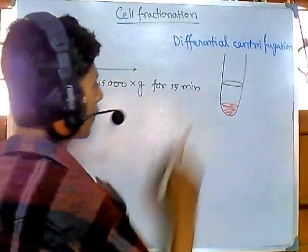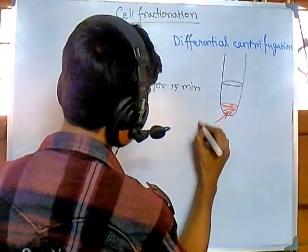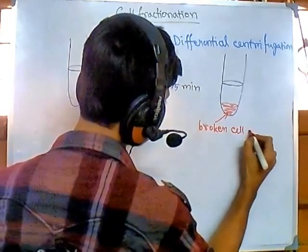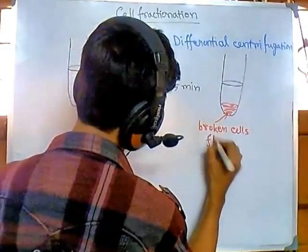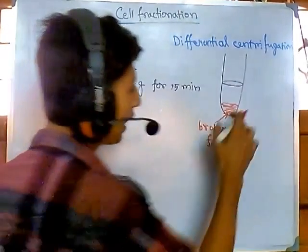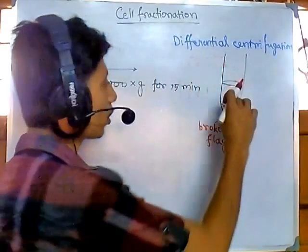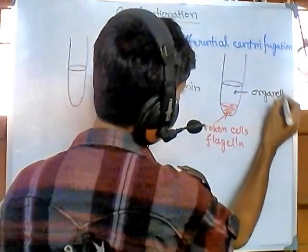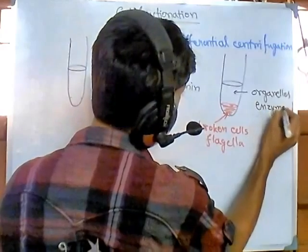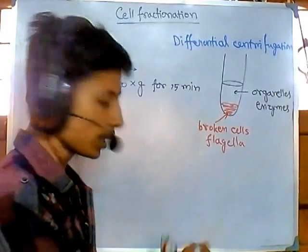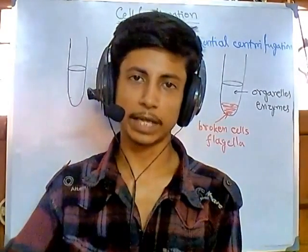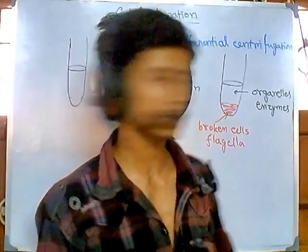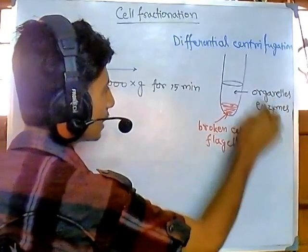The heavy materials that settle form what we call the pellet. This pellet is mostly made up of broken cell fragments, cell components, and also flagella. Whatever remains in the solution above is called the supernatant, or 'soup.' In the supernatant we have most of the organelles, enzymes, and other components. So at this stage we've settled out flagella and heavy debris, and the organelles and enzymes remain in the soup.